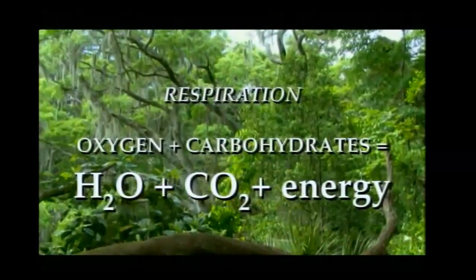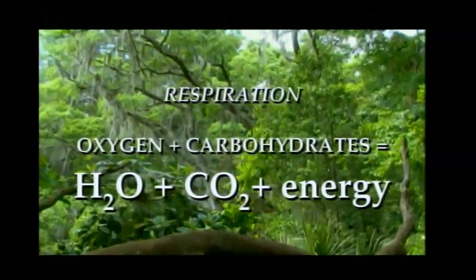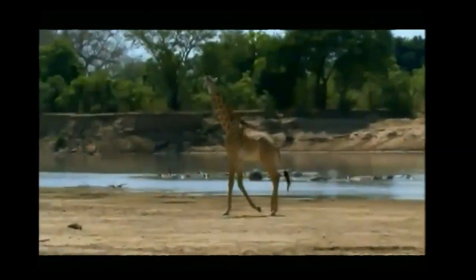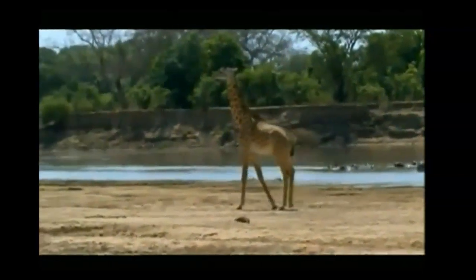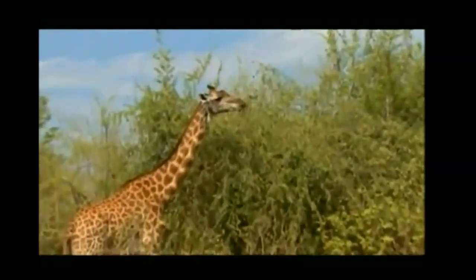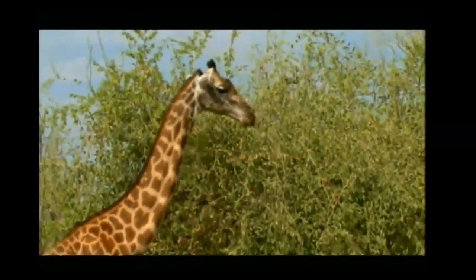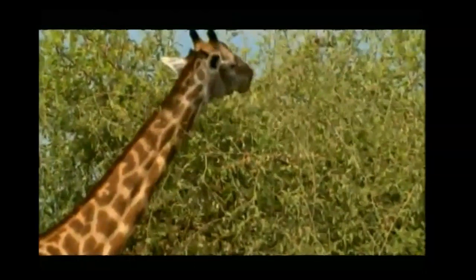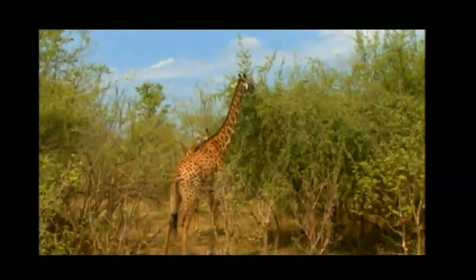During photosynthesis, carbon dioxide from the air and ordinary water are combined to make carbohydrates — energy-rich food materials including the sugars that sweeten fruits. Photosynthesis makes our crops grow and puts energy in the foods we eat. The oxygen is released back into the atmosphere. In fact, all of the oxygen in our atmosphere is produced by photosynthesis. Since photosynthesis completely depends on carbon dioxide in our air, it's easy to see why it's so important.